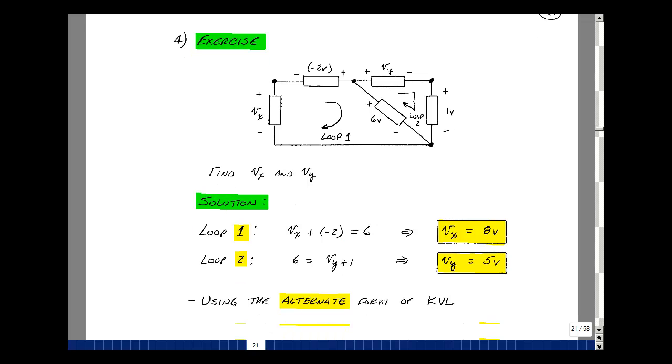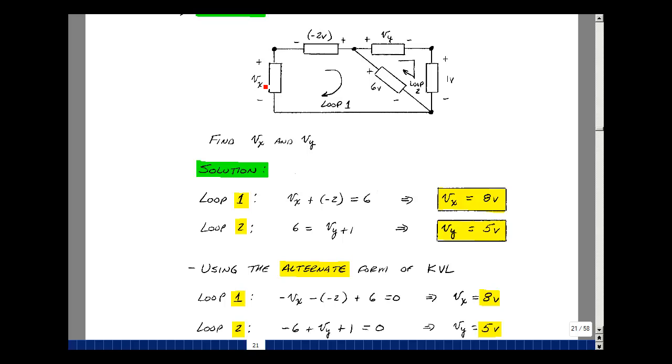Now the alternative form. Subtract the rise in voltage, subtract this rise in voltage, add the drop in voltage. Minus v sub x. Again, we're going to take a minus times the quantity, a minus times the quantity, and a plus times the quantity. Again, you get the same result, 8. Around this loop, I've got a rise in voltage here, so I'm going to subtract 6. I'm going to add v sub y, and I'm going to add 1. And again, I get 5 volts.